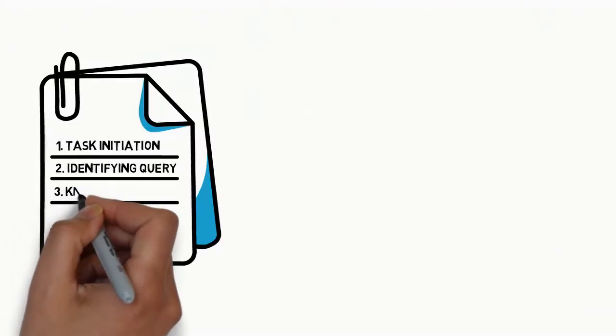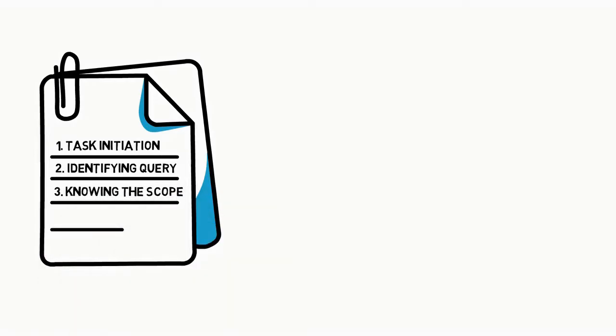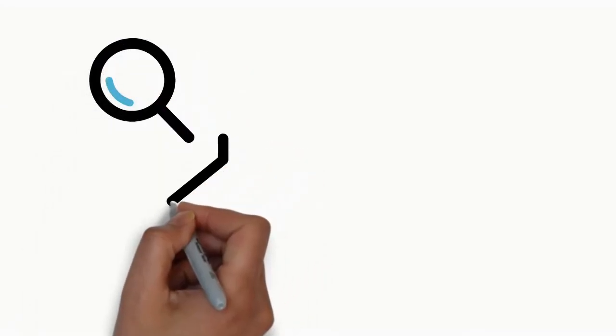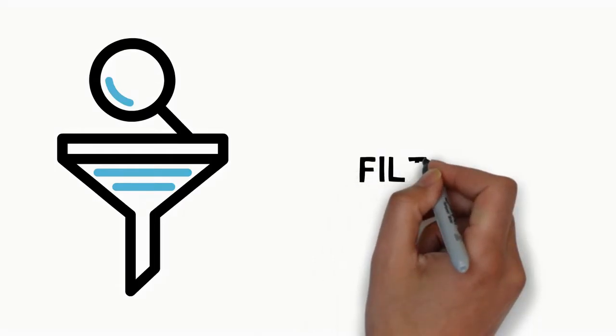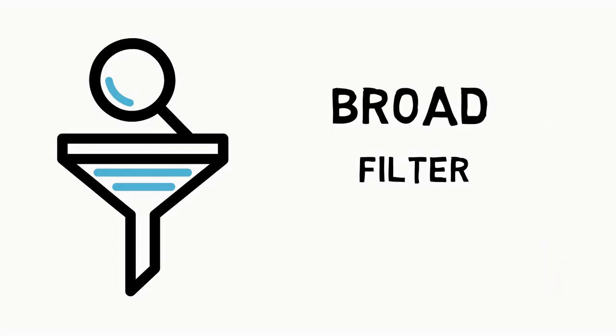This leads us to the next step, which is to know the scope of your information need. This is where the specifics come in. After defining the context, you would be able to specify criteria to filter your questions from broad to specific.